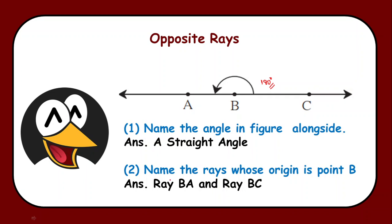Now we need to name the rays whose origin is point B. Now children see whose origin is point B. Now from point B how many rays we are able to find out that are emerging. Now see from point B we are able to see ray BA and ray BC.